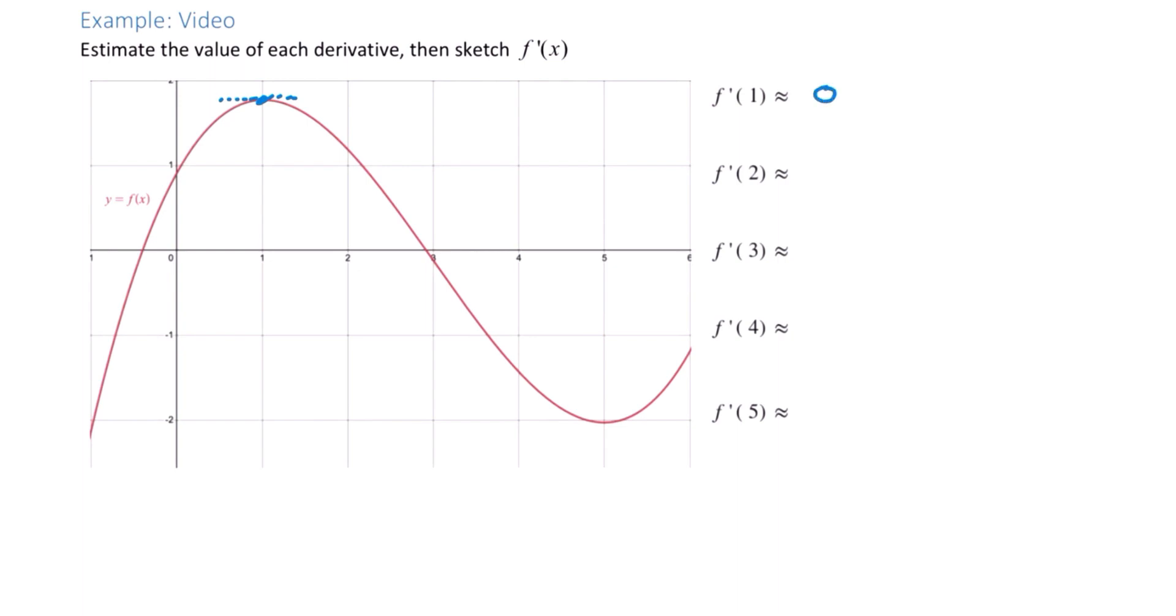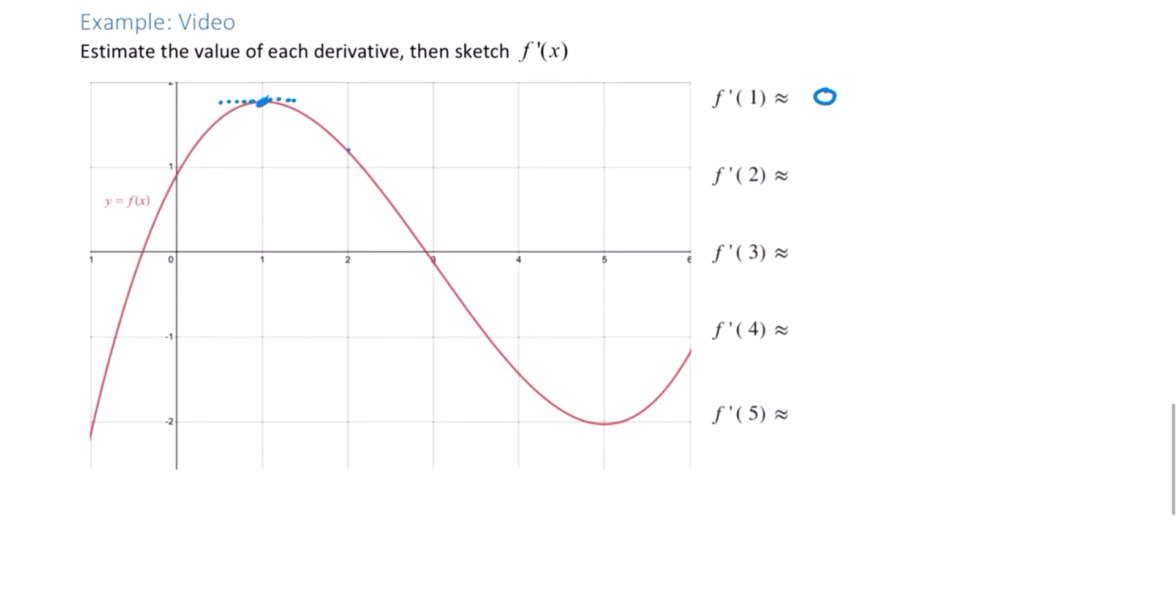The next one's not quite as obvious. We want to look at f'(2). So here's 2 on our original f, and we're trying to estimate the slope of the tangent line. Your estimate might be a little different than mine. It's helpful if you can draw a sketch of a tangent line. It's hard to draw a sketch sometimes.